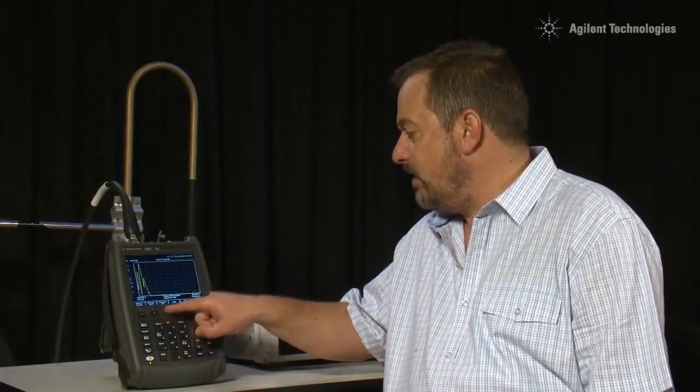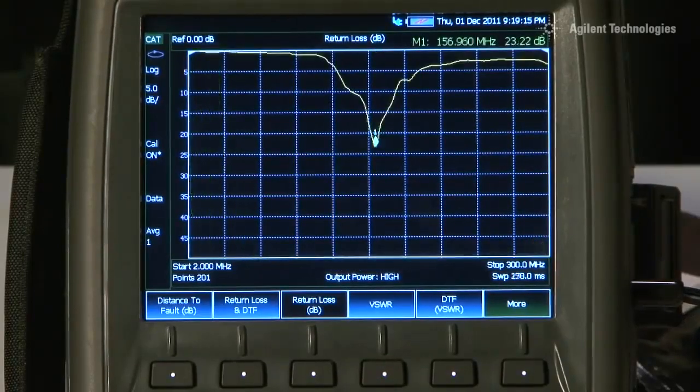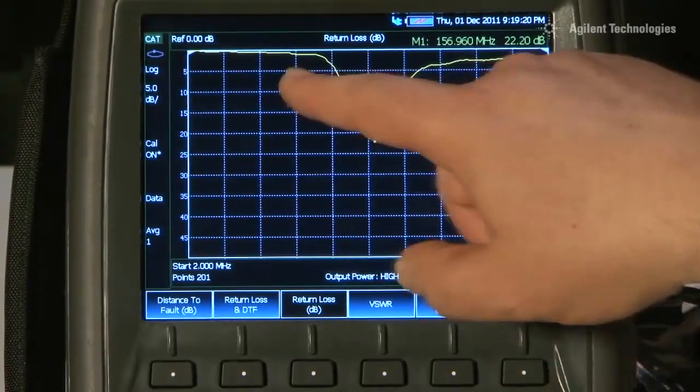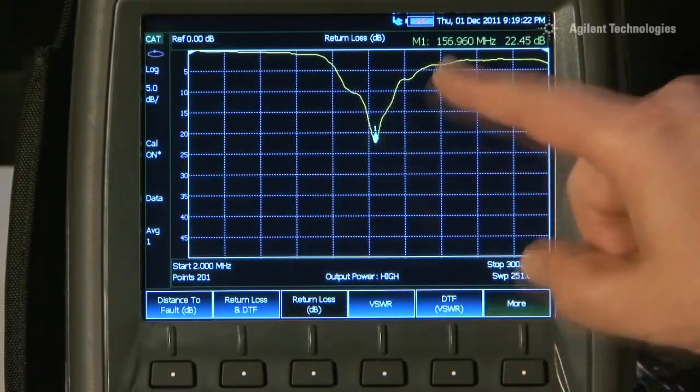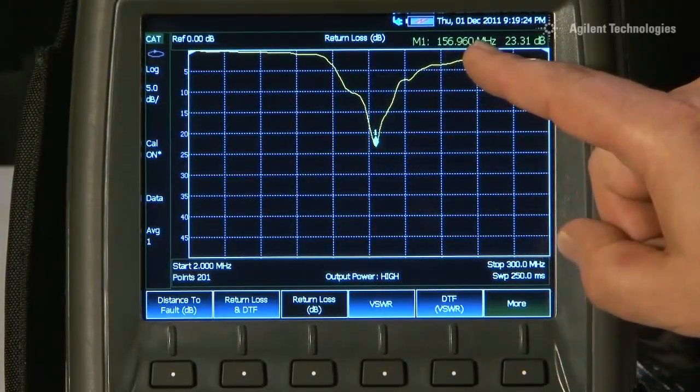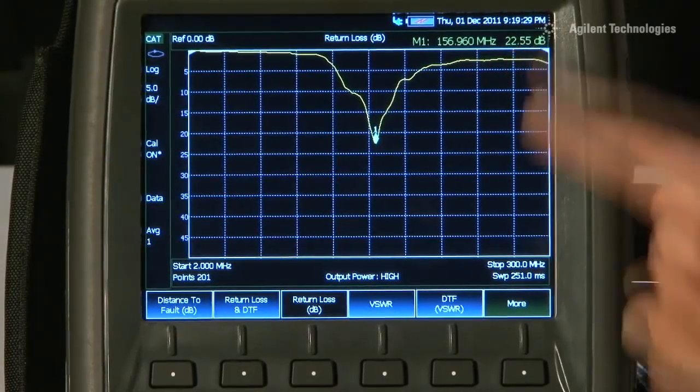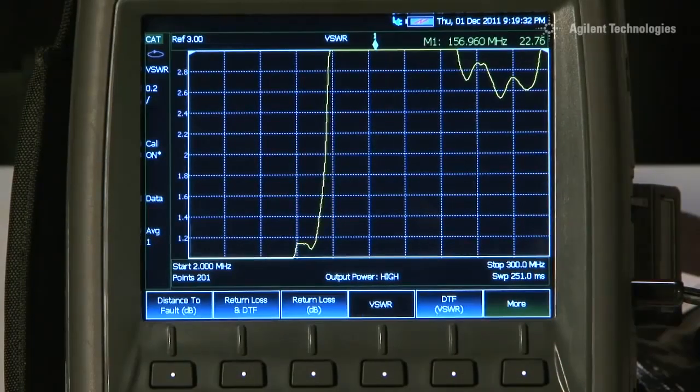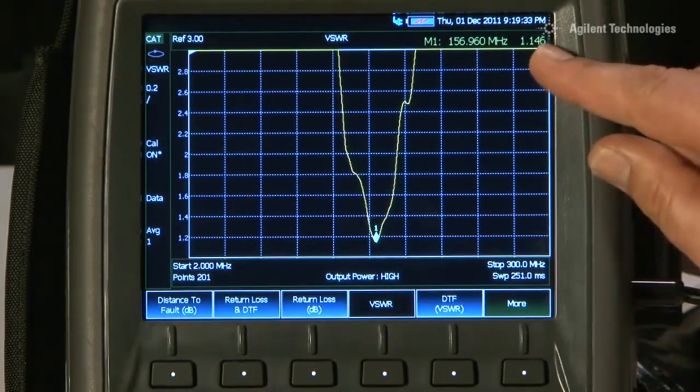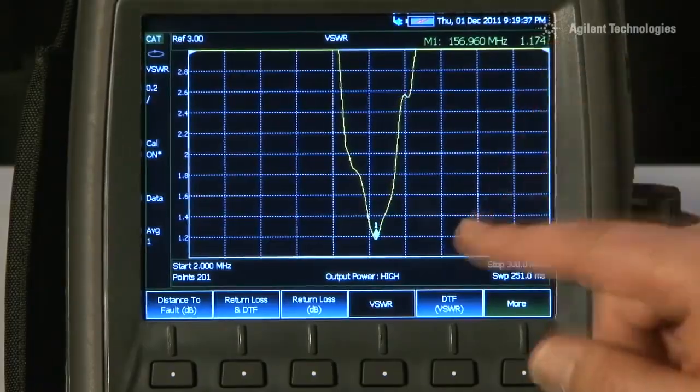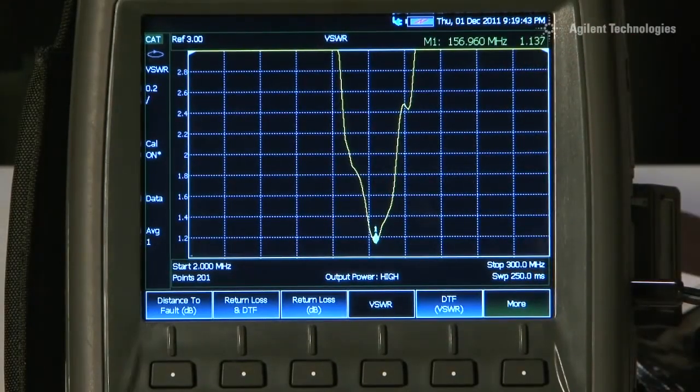If I now select the measurement of return loss in dB, we can now see a far clearer display of the antenna return loss. A nice clean notch, and you can see that at 156.96 MHz, we have a 22 or 23 dB return loss. Or, if I want to see that in VSWR terms, we can see that is a VSWR of about 1.1 to 1. So the antenna works absolutely perfectly, no problem at all. It has got a nice response, it is tuned on frequency, and the return loss, or VSWR, is just as we would want.